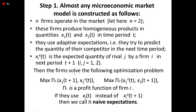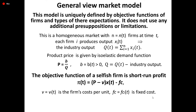Then the firms solve the following optimization problem: maximize P_1 of X_1(t+1) and X_2^e(t); maximize P_2 of X_1^e(t) and X_2(t+1), where P_i is the profit function of firm i. If they use X_i(t) instead of X_i^e(t+1), then we call it naive expectations.